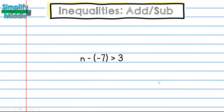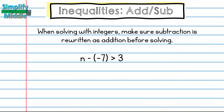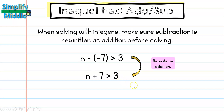Let's look at an example with integers. When solving with integers, make sure subtraction is rewritten as addition before solving. For this problem, n minus negative 7 is greater than 3. I rewrite that as adding the opposite, so n plus 7 is greater than 3. Now I solve normally: to isolate n, I do the inverse of add 7 and subtract 7 from both sides. The 7s cancel, and I end up with n is greater than negative 4.